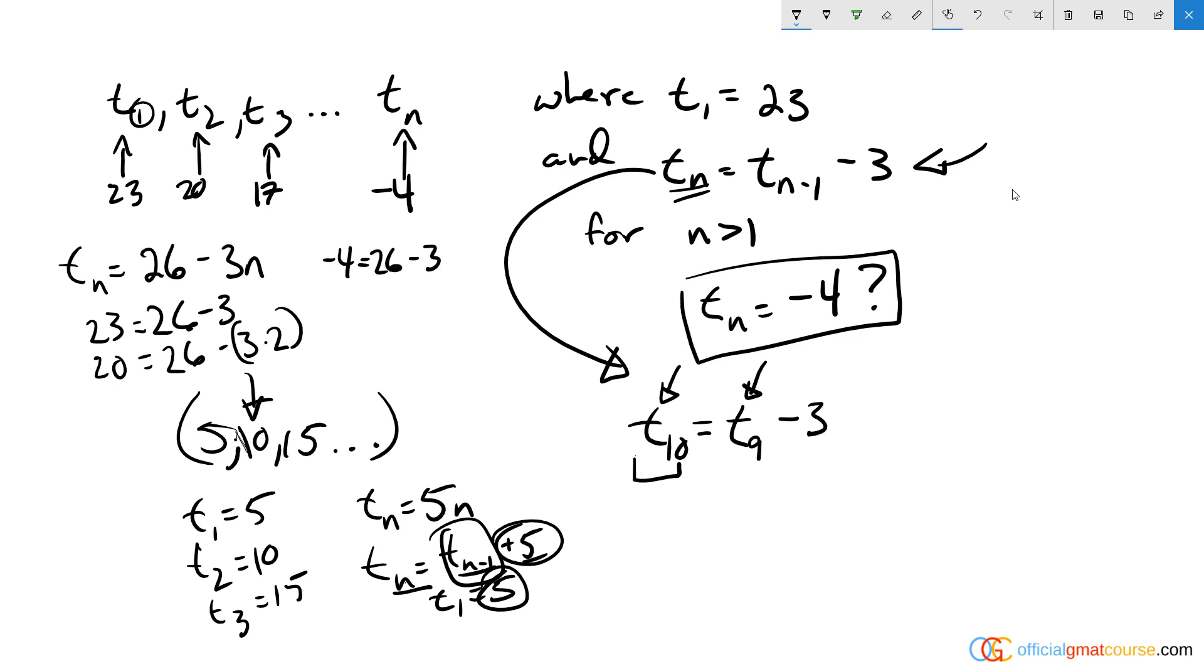I can then actually solve this. Subtract 26 from both sides and I get negative 30 equals negative 3n, which means n equals 10. And that would be our answer, which is answer choice C. Another way to do this would literally be, and you have time to do this if you understand it, just jot them out.